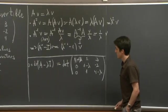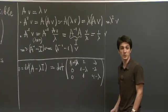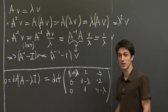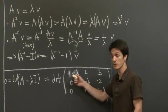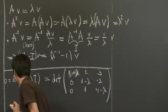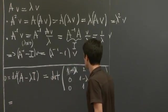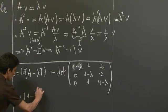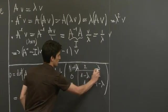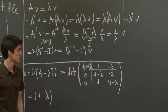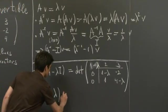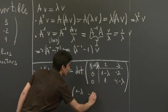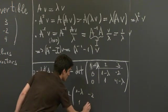So it's fairly obvious which column we should use to expand this determinant. We should use the first column because we have only one non-zero entry. And so this is equal to 1 minus lambda times the determinant of the 2 by 2 matrix: 1 minus lambda, negative 2, 1, 4 minus lambda.